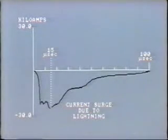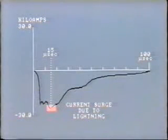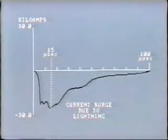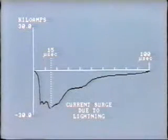Oscillographs do have their limitations. For example, a lightning surge would not be recorded because it's much too fast. A typical current surge due to a lightning strike reaches its peak and decays to zero in a matter of microseconds. Although conventional recording machines could not pick up the actual surge, we may be able to see the effect of the lightning.